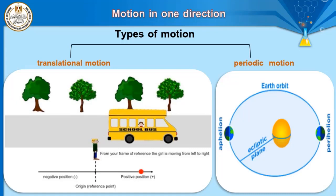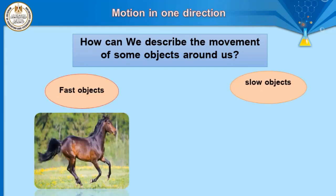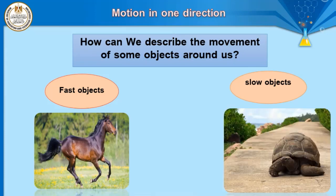Motion in one direction is the simplest form of translational motion. How can we describe the movement of objects around us? There are many objects that move, but some can be described as fast and others as slow. From this we can know how to describe the motion of an object by two factors.